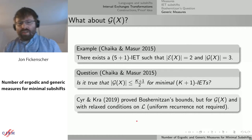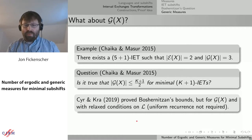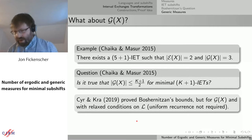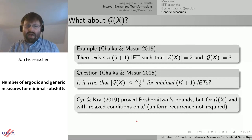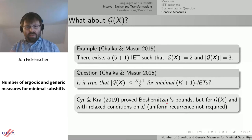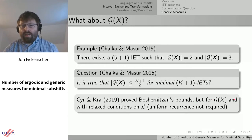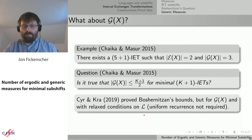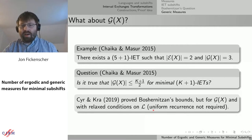The proofs used to show the bound for ergodic measures don't exactly work for generic measures because they don't have the same properties. So it was left as a question: is it true that the number of generic measures has the same bound for minimal interval exchanges? As far as I can tell this is open — there's no proof — and I would be very happy if there was a proof coming first from word combinatorics.